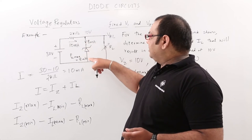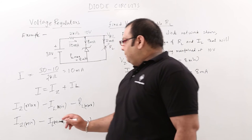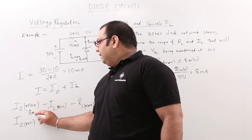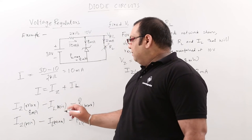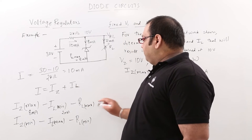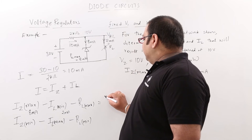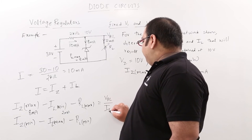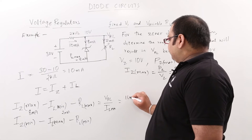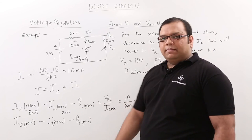The total current is 10 milliamps, and if 8 milliamps enter the Zener, then the remaining current in RL is 2 milliamps. So when IZ maximum is 8 milliamps, IL minimum is 2 milliamps. Therefore RL maximum = VRL / IL minimum = 10 volts / 2 milliamps = 5 kilo ohms. That is the maximum RL we can use.